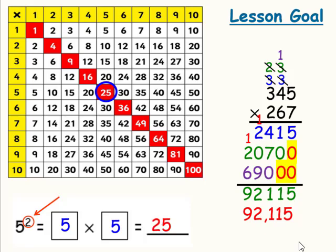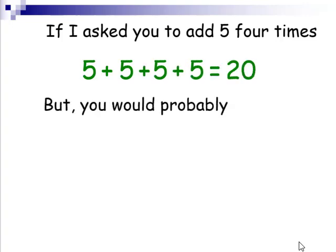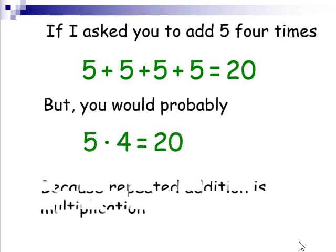5 times 5 is 25. If I asked you to add 5 four times, you probably would say that's just 5 times 4, which is 20, because repeated addition is multiplication.